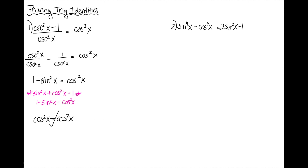You do not need to show that working. If you know that 1 minus sine squared x equals cosine squared x, you can just jump right to that line. I just wrote it out so you can see what's going on. Number two: I have sine to the fourth x minus cosine to the fourth x is equal to 2 sine squared x minus 1.